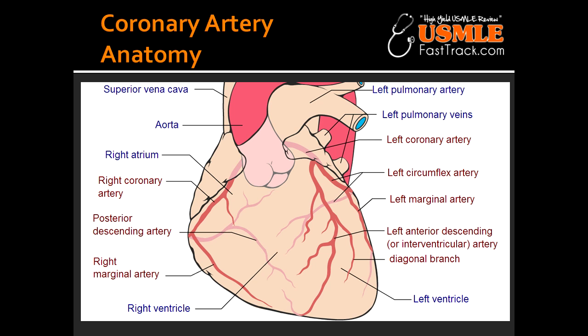Going now onto the right side, you see the right coronary artery, known as the RCA. There's also the acute marginal artery and the posterior descending artery, also known as the interventricular artery.